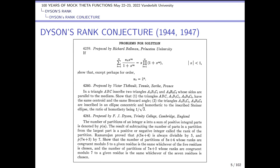Dyson conjectured that the number of partitions of 5n+4 whose ranks are congruent modulo 5 to a given residue is the same, whichever of the five residues is chosen. And the number of partitions of 7n+5 whose ranks are congruent mod 7 to a given residue is the same, whichever of the seven residues is chosen.